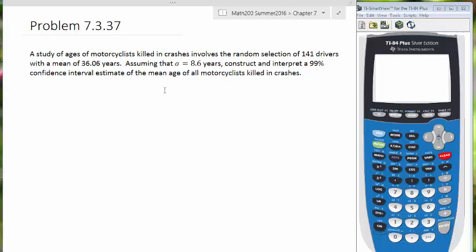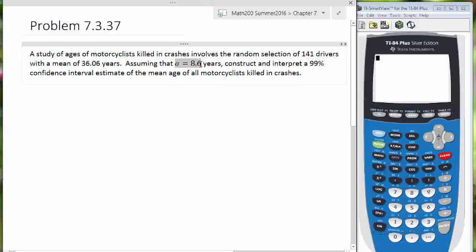Let's first gather some information here. First thing I want to highlight is the fact that sigma is given, sigma equals 8.6 years. We'll get that piece of information down, and then we look for more stuff. We have the mean given to us as 36.06 years, and finally our n is given to us as 141.